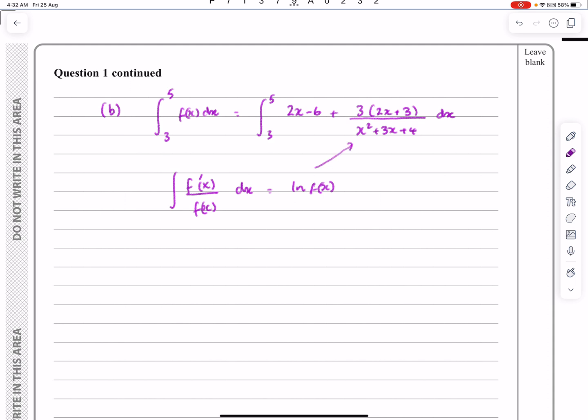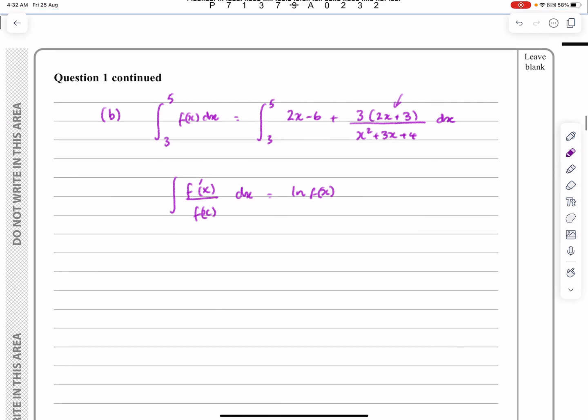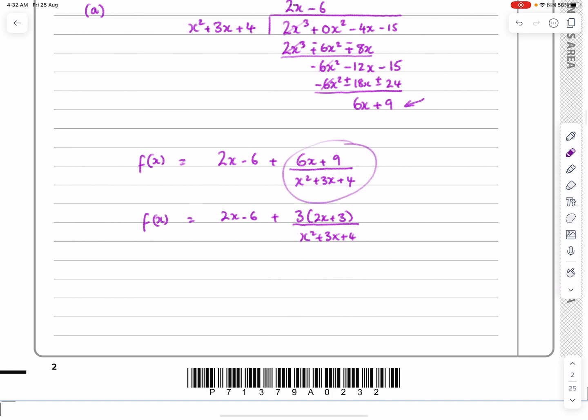Okay, so when we're looking at this thing, the differential of this denominator, the differential of x squared plus 3x plus 4 is 2x plus 3. Very clever of the examiners then that they actually made me write it in this format and actually had the 2x plus 3.